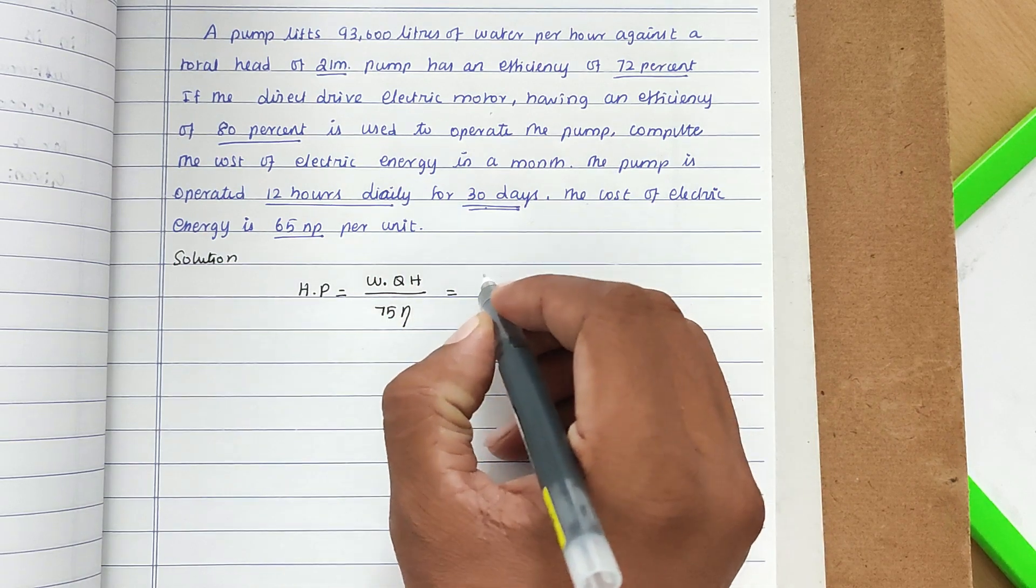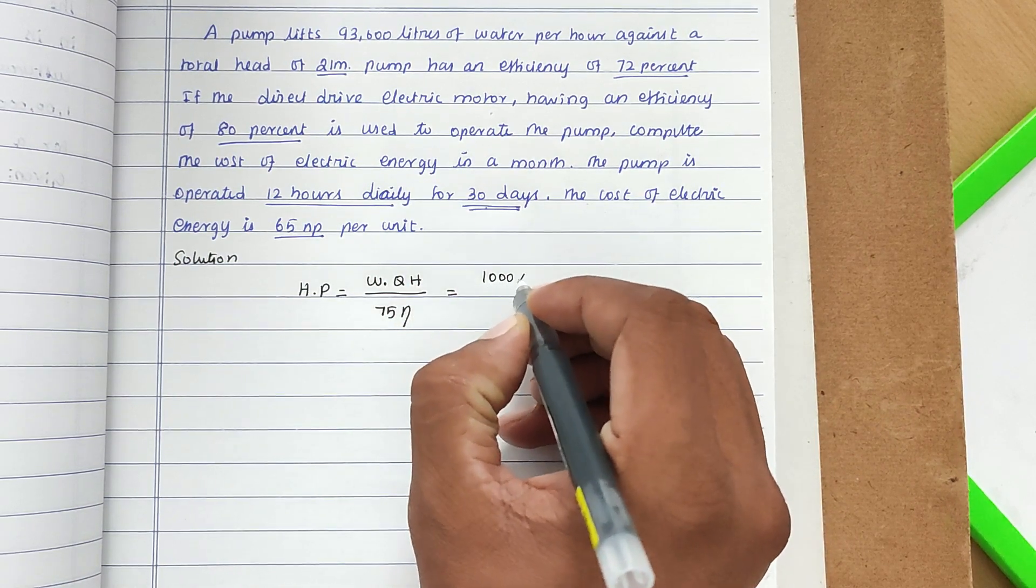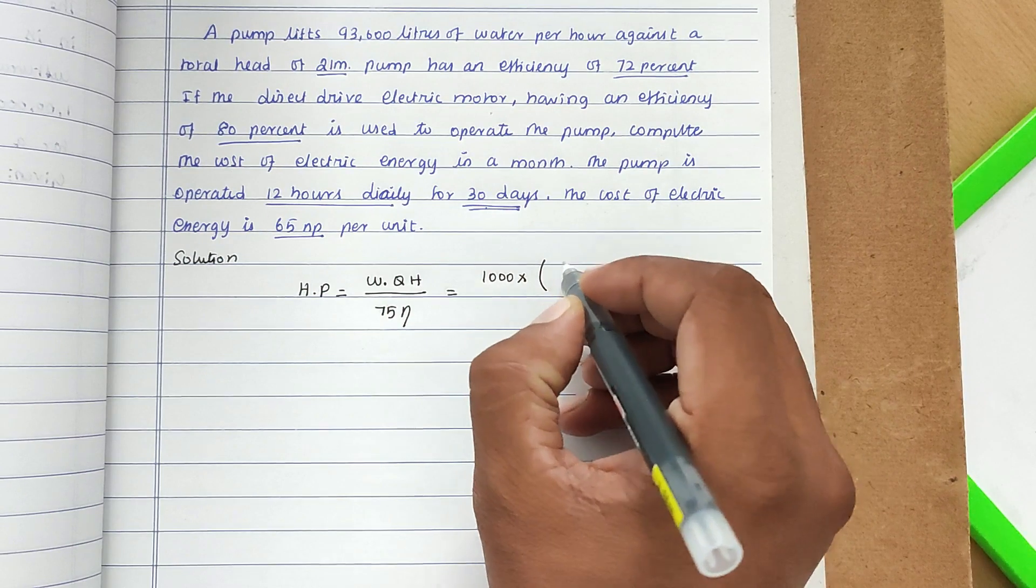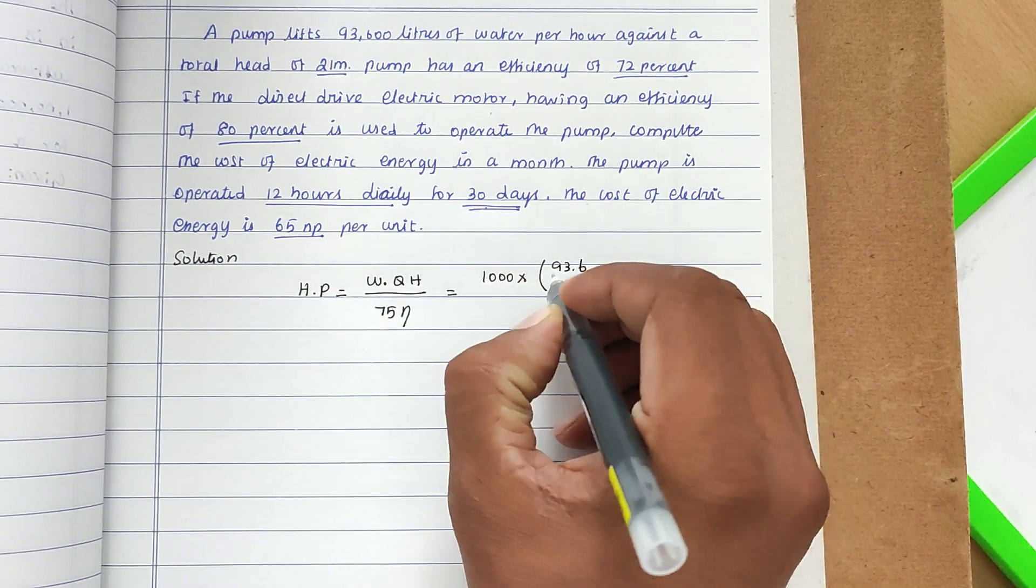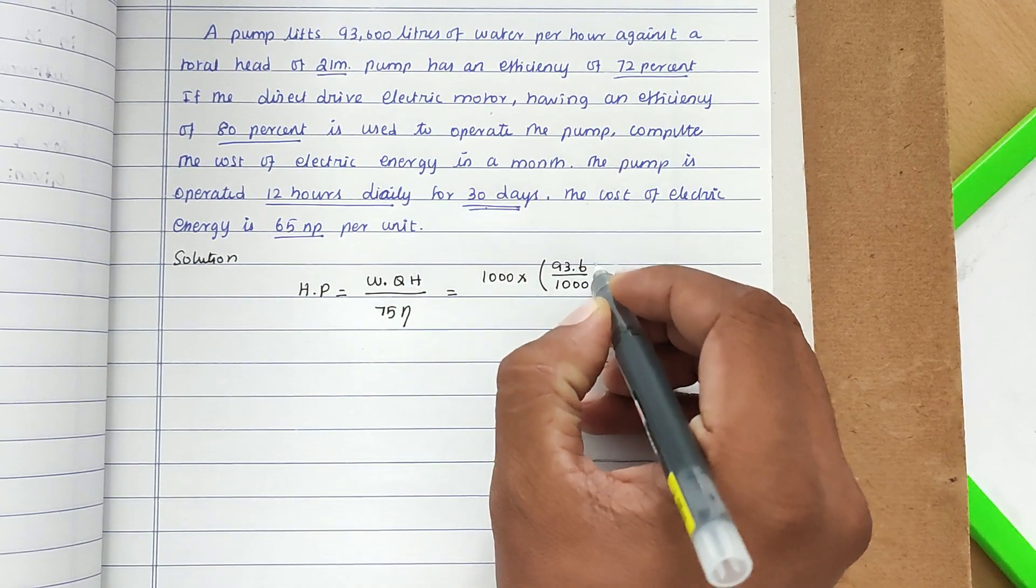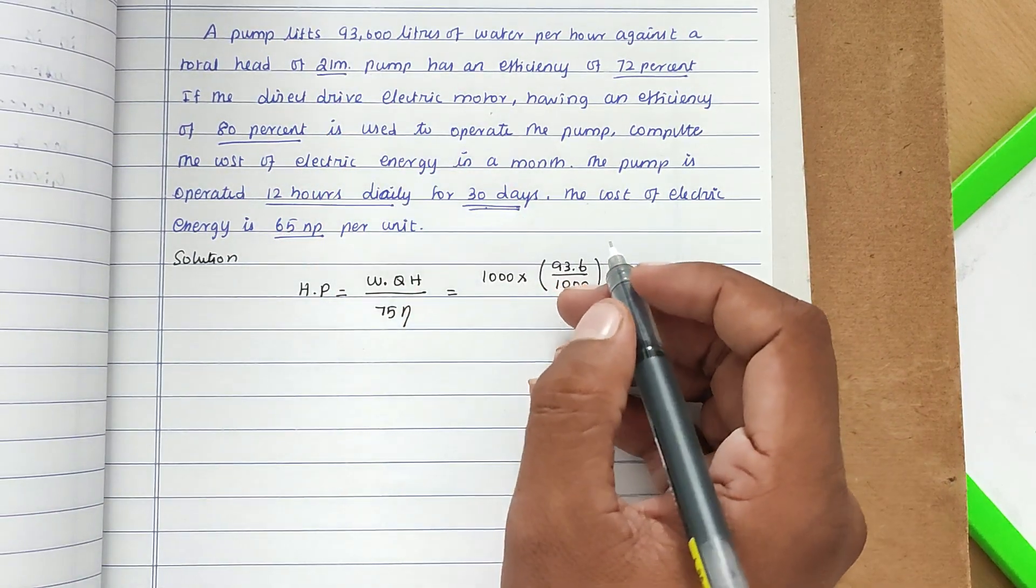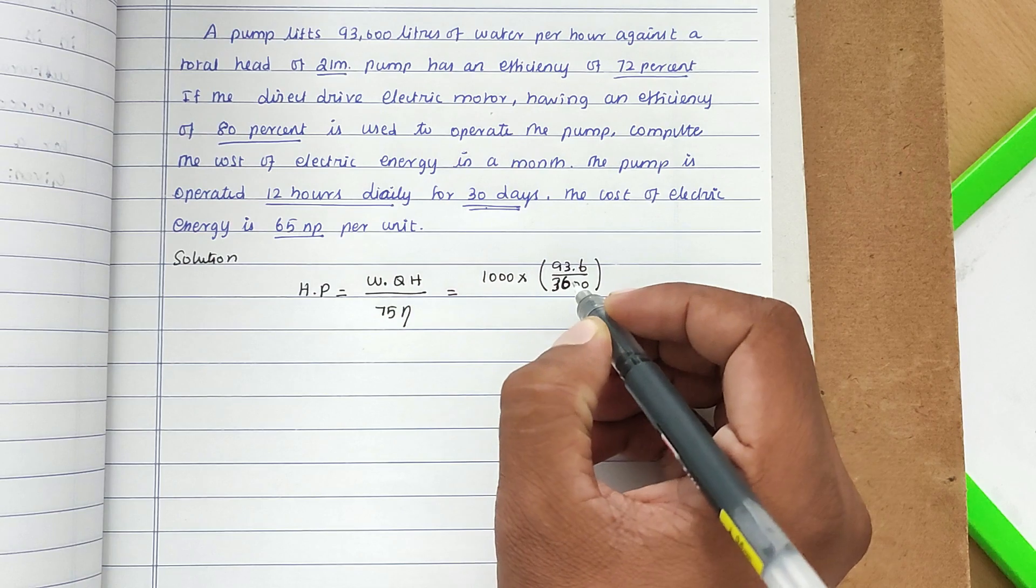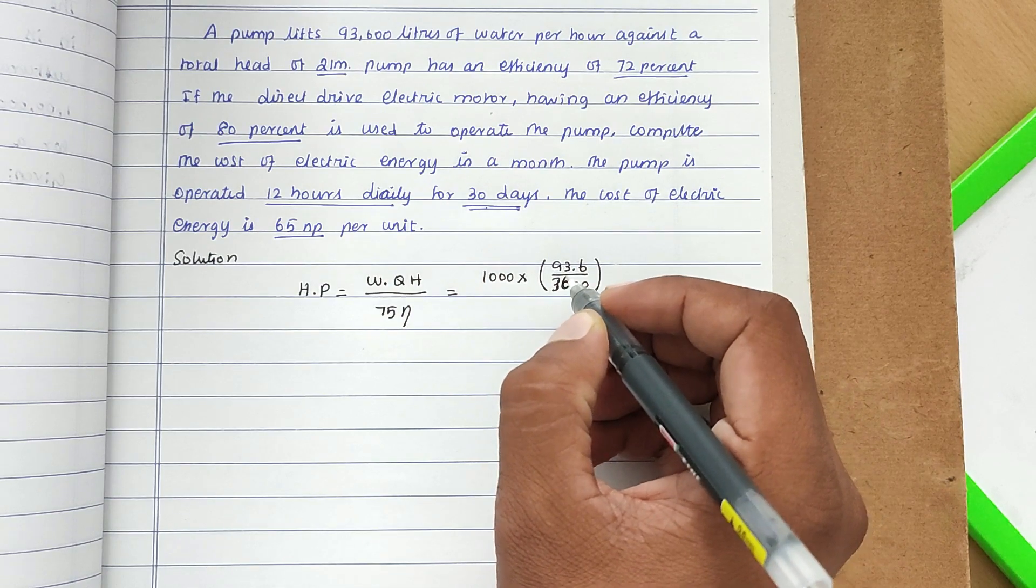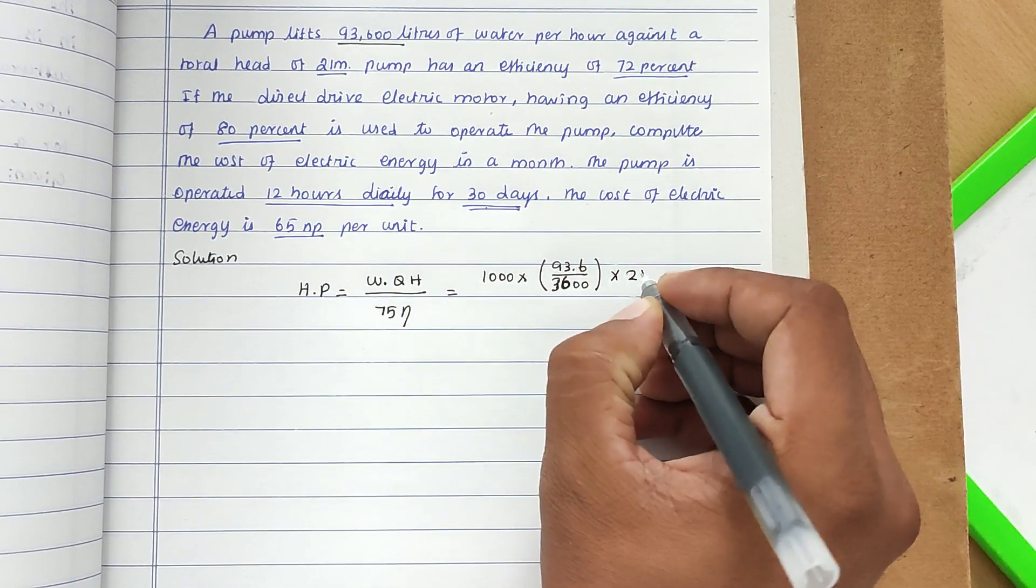W is 1000 × Q which is 93.6 divided by 1000. We convert liters to meter cube by dividing by 3600 × H value which is 21.